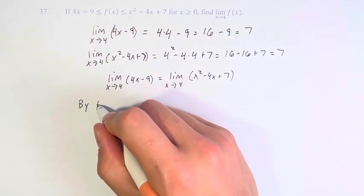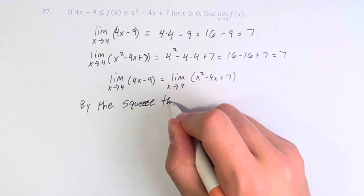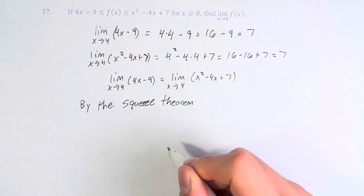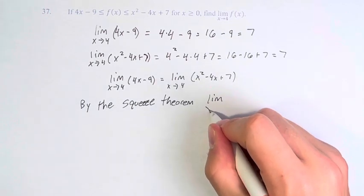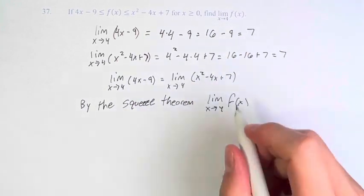By the squeeze theorem we can say that the limit as x approaches 4 of f(x) equals the limit of these functions, which equals 7.